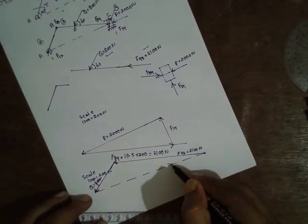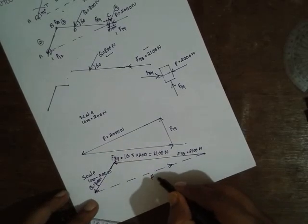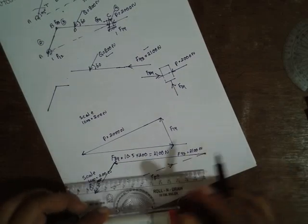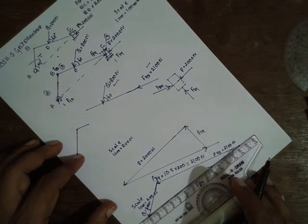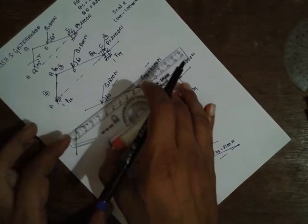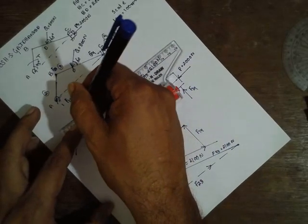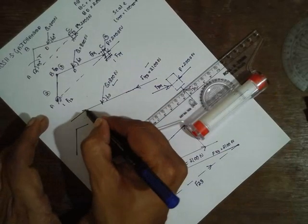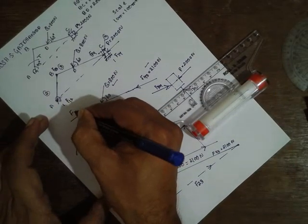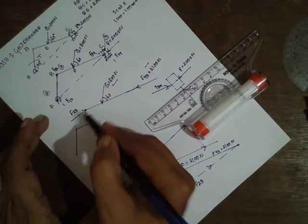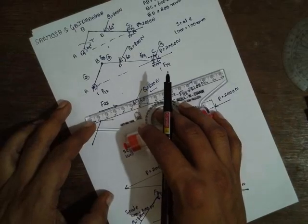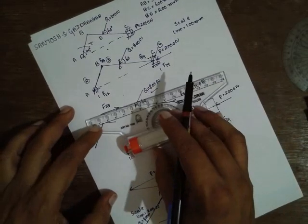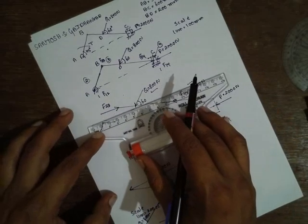10.5, I will draw it. The arrow is this side. As per the force polygon, if the arrow is this side, next should be exactly at the bottom. This will be in this way. It is 800, means it should be 4.